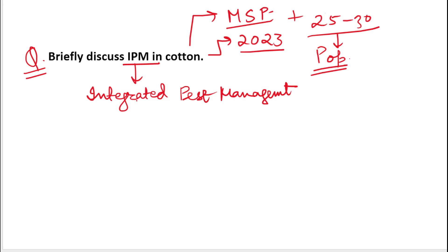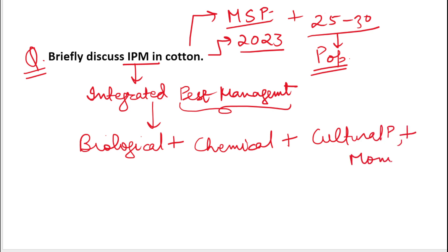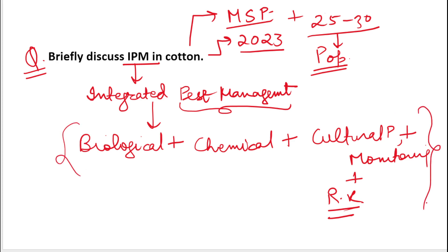So we have to discuss Integrated Pest Management in cotton. What is Integrated Pest Management? Here we are integrating various management techniques such as biological control, chemical control, cultural practices, monitoring, and record keeping — everything we can do for pest management. This is what we call Integrated Pest Management.